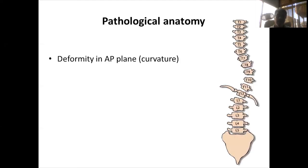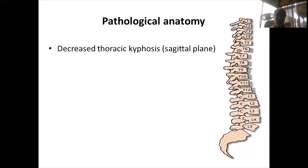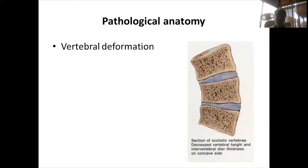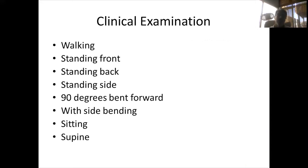Regarding pathological anatomy, it is a three-dimensional deformity: there is lateral translation in the AP plane, commonly a hypokyphosis or lack of thoracic kyphosis in the sagittal plane, and axial rotation in the horizontal plane. Over time, asymmetric loading leads to vertebral deformation as well.